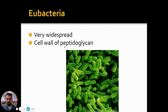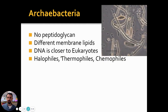Here's a fun fact: the antibiotic penicillin — which some of you may be allergic to — works by causing eubacteria to be unable to manufacture peptidoglycan. It inhibits the formation of their cell wall, which leaves them defenseless — like a plant cell without its cell wall, it loses all protection and your body can fight off the bacteria. That's how penicillin actually works. Archibacteria, on the other hand, do not have peptidoglycan in their cell wall; they use very different membrane lipids and their DNA is actually closer to eukaryotic DNA.